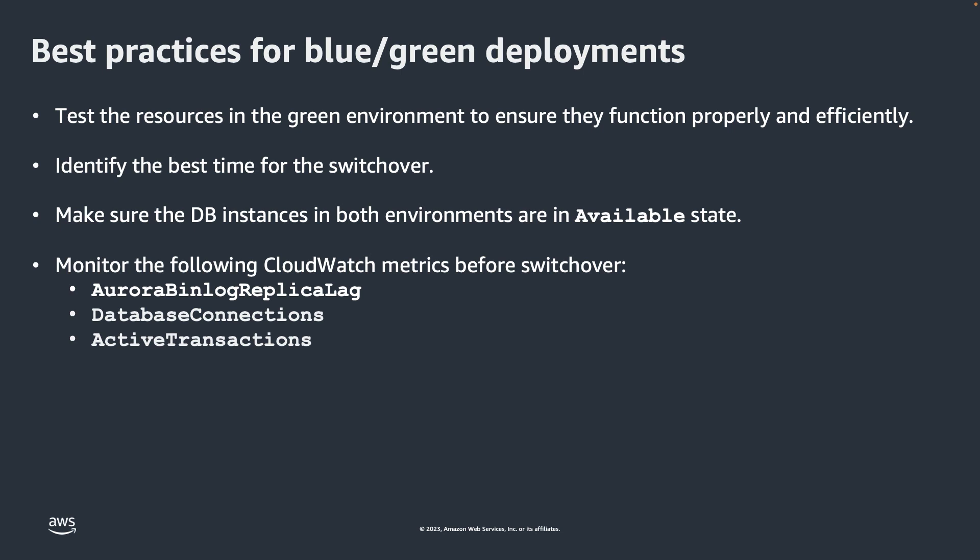There are some CloudWatch metrics that we recommend keeping an eye on before the switchover. The first is the Aurora bin log replica lag metric, which identifies the current replication lag to the green environment. During the switchover, there is a step to wait for the replication to catch up, so an ideal time for switchover is when this value is as close to zero as possible to reduce overall downtime. You can also look at the database connections metric, or if you have Performance Insights turned on, look at the DB load CloudWatch metric to estimate the level of database activity.